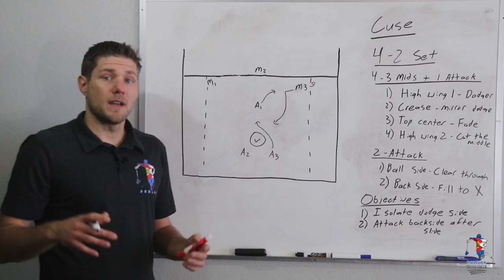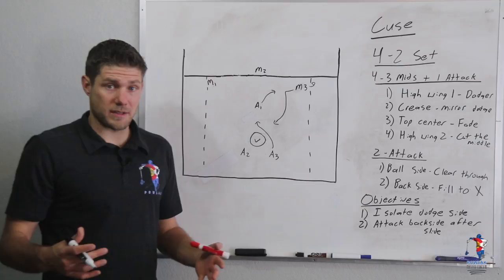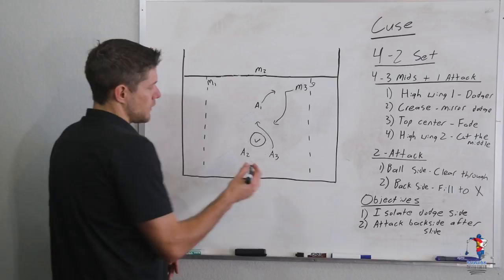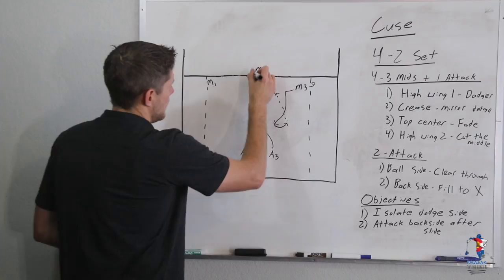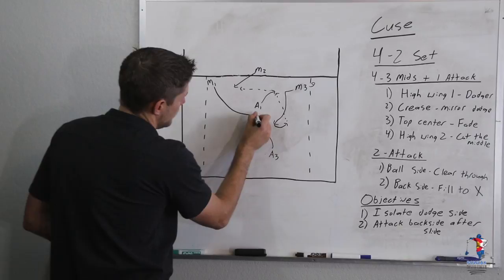If we do draw a slide, now what we want to do is we want to attack the backside, and that's going to work two separate ways. The first way is if he decides to roll back, move the ball up to the mirror. The mirror will then pass to the fade. This guy would have already cut through. Now this fade player can dodge as the second dodge and try to score there.